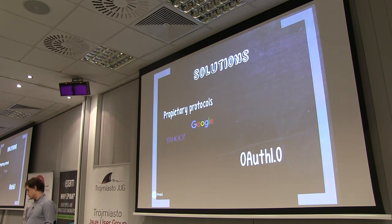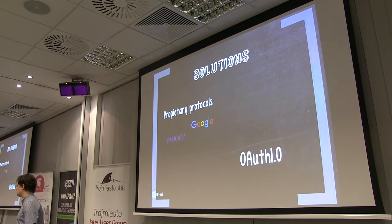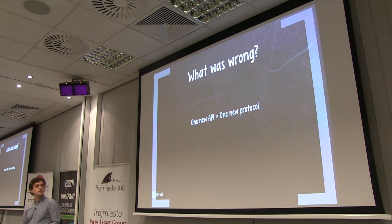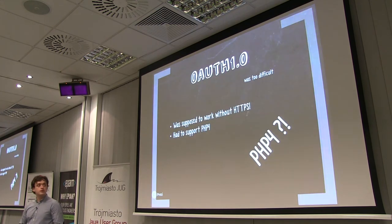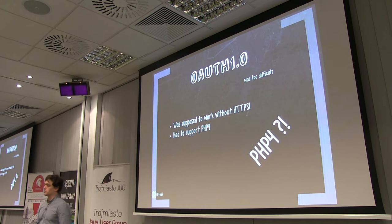OAuth 1.0 was supposed to be an interoperable, widely deployed protocol. But it wasn't widely adopted, because the protocol was too complex — for two reasons. First, the development group focused heavily on security but missed one key point: security must be simple. If it's complex, users either won't implement it at all, or they'll implement it badly, leading to security holes.